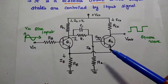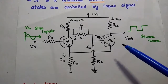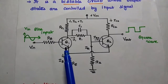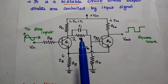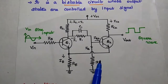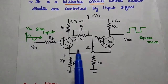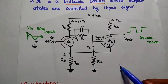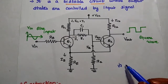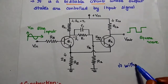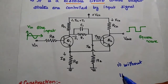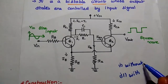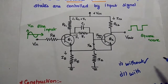Next, we are going to discuss the operation of the Schmitt Trigger. The input is applied to the base of transistor Q1. Resistors R1 and R2 provide the voltage divider bias to the circuit. Here we can consider two conditions: one is without any input — what will happen — and next one is with an input signal.